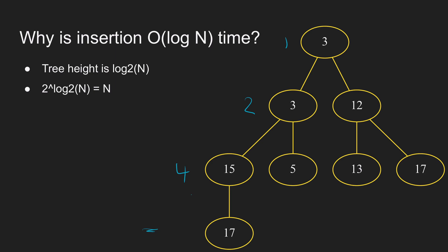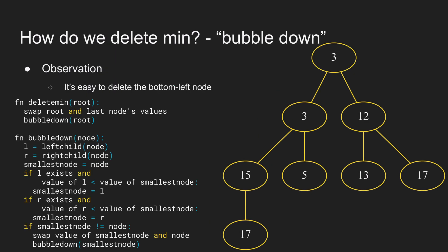Now let's look at deleting the minimum element. The observation is that it's easy to delete the bottommost left node, but we want to delete the root. So what we can do is swap the bottommost left node's value with the root node's value. Now we have 3 at the bottom and 17 at the top, and we can easily delete the bottom node. But now we've violated the heap property at 17. So we do a similar operation to insertion except we go down the tree rather than up — this is called bubble down.